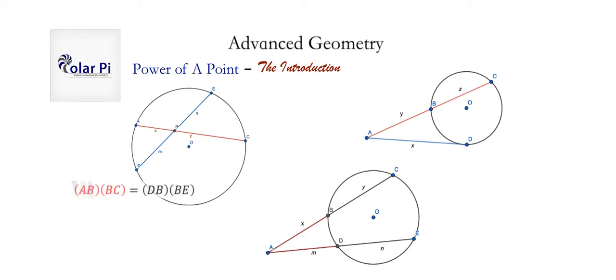So here's what's true in case one. In case one, the length of segment AB times the length of segment BC has to equal the length of segment DB times the length of segment BE. And as I said, we'll prove why this has got to be true. And based on the names given to the length of the segments, this is what we'll have in case one.